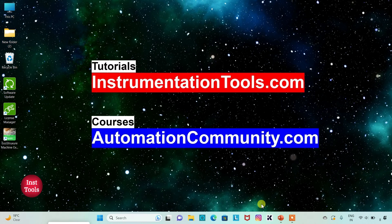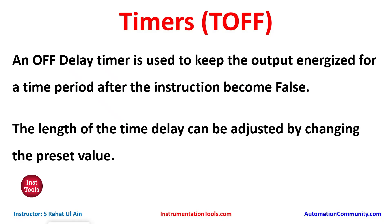Hello friends, welcome to Automation Community. Today in this video we are going to discuss about a timer known as TOF. TOF, an OFF delay timer, is used to keep the output energized for a time period after the instruction becomes false. The length of the time delay can be adjusted by changing the preset value.